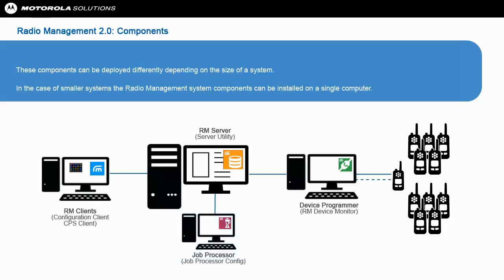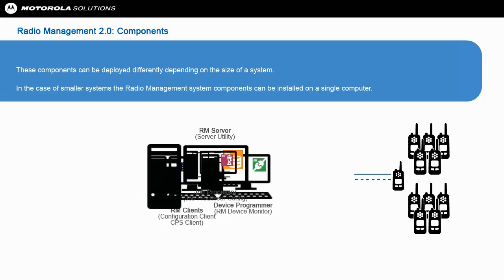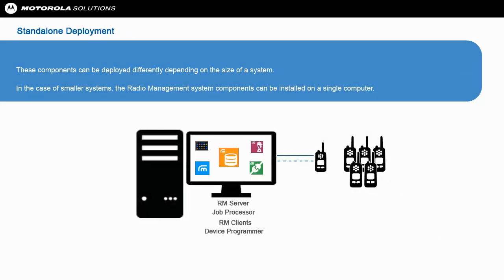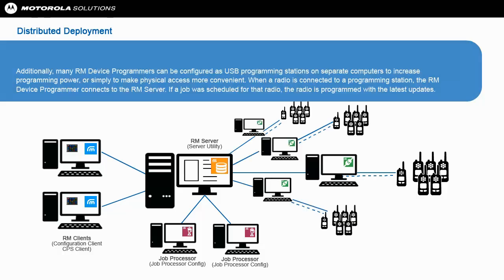These components can be deployed differently depending on the size of a system. In the case of smaller systems, the radio management system components can be installed on a single computer. However, Motorola recommends a separate computer for the RM server to experience superior power and flexibility. Installing the RM server on a separate computer allows for multiple RM configuration clients to remotely share the stored data. Additionally, many RM device programmers can be configured as USB programming stations on separate computers to increase programming power or simply to make physical access more convenient.